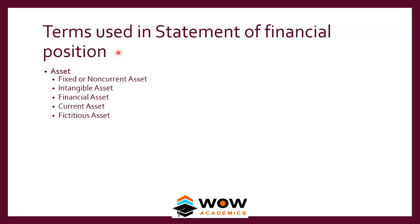Now we look at the terms used in the statement of financial position. The key asset types are: asset, fixed asset or non-current asset, intangible asset, financial asset, current asset, and fictitious asset. Note that names used in India and internationally differ — for instance, India uses 'fixed asset' while IFRS and the UK use 'non-current assets'. These terms are used interchangeably, and it is important to know both since international accounting standards are now the norm.